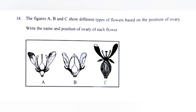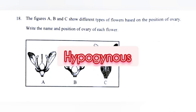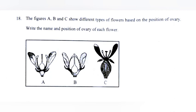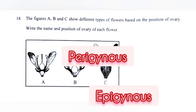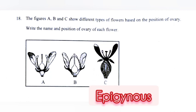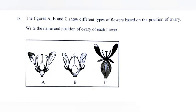The figures A, B, and C show different types of flowers based on the position of ovary. Write the name and position of ovary of each flower. Answer: A — hypogynous, ovary superior; B — perigynous, ovary half inferior; C — epigynous, ovary inferior.